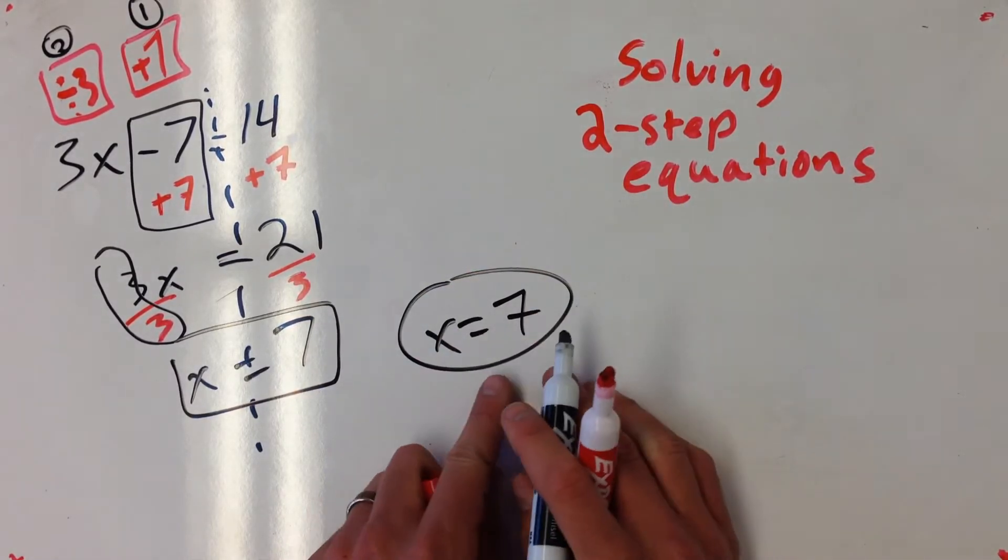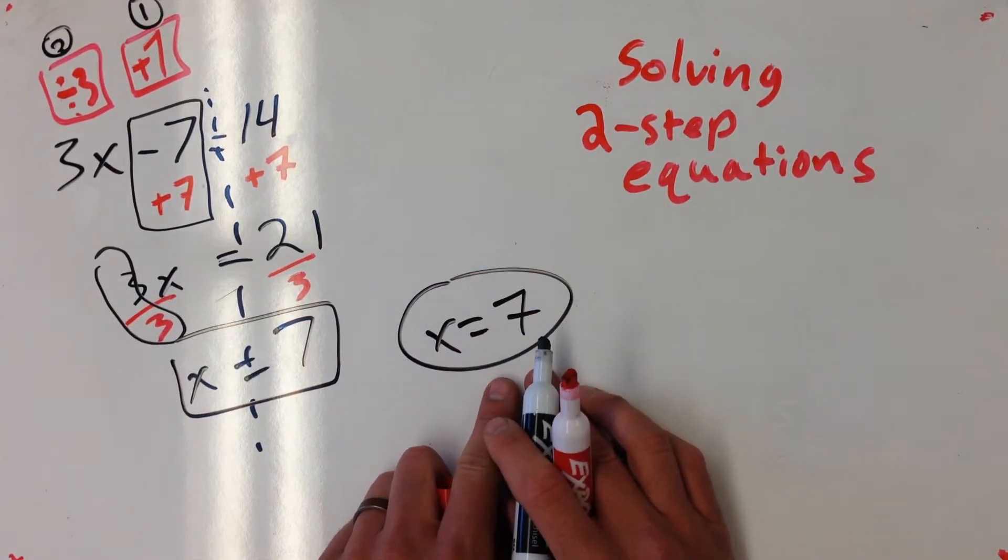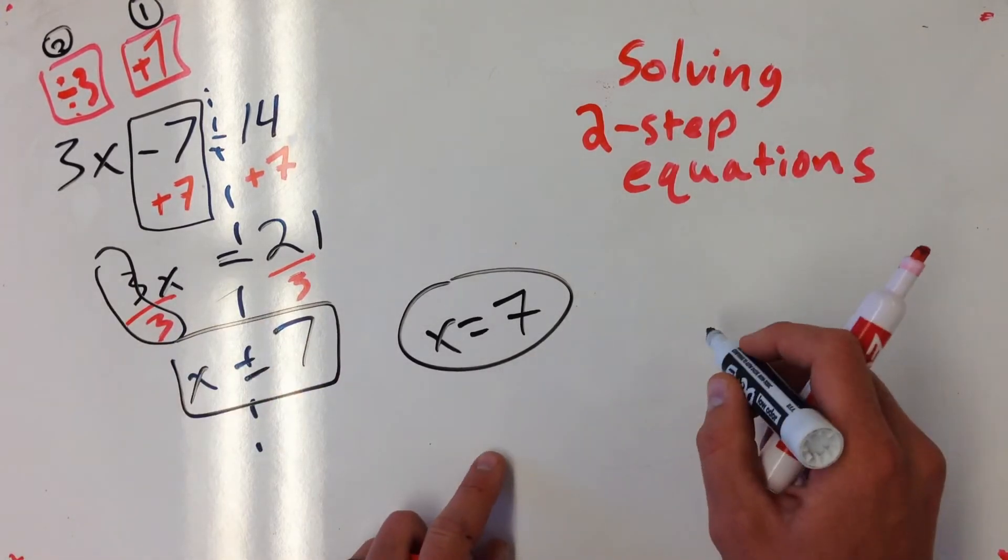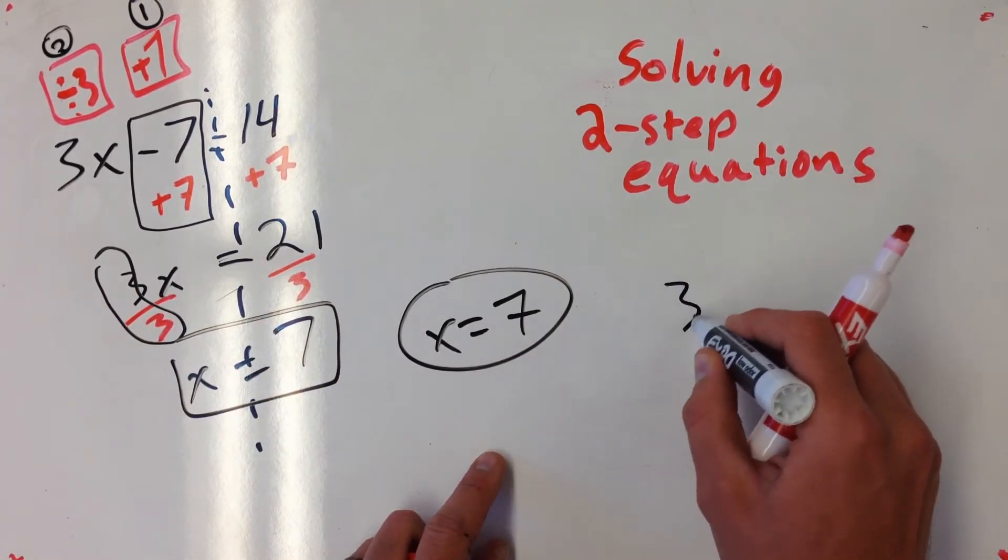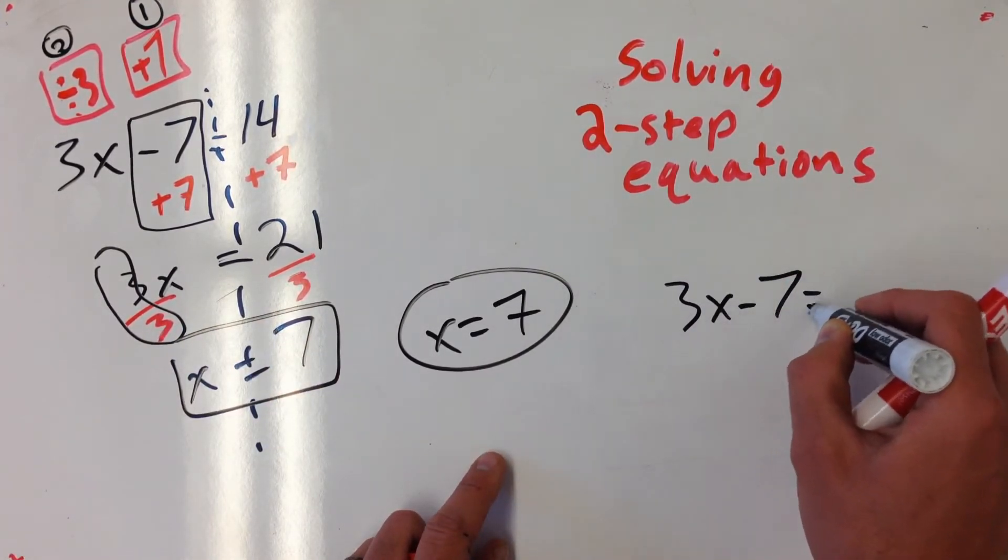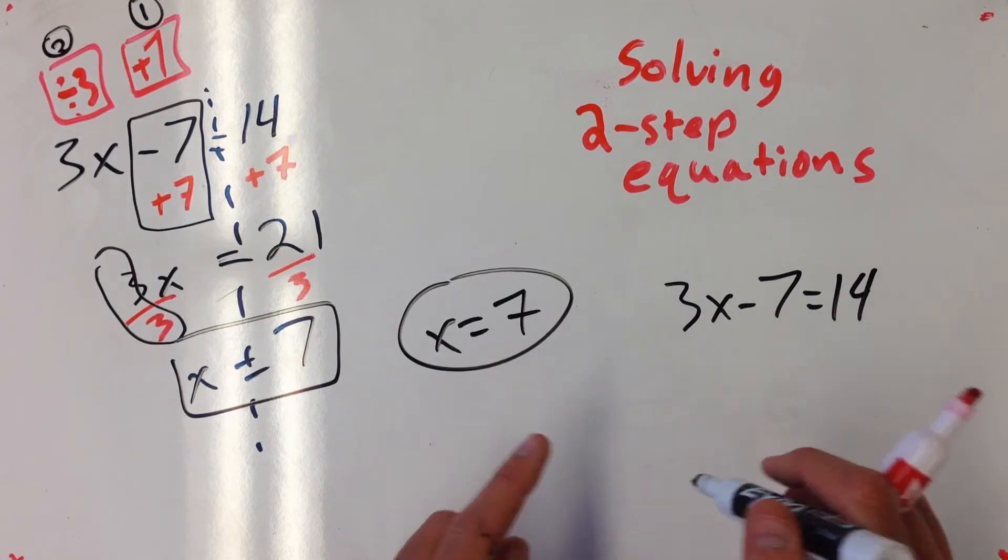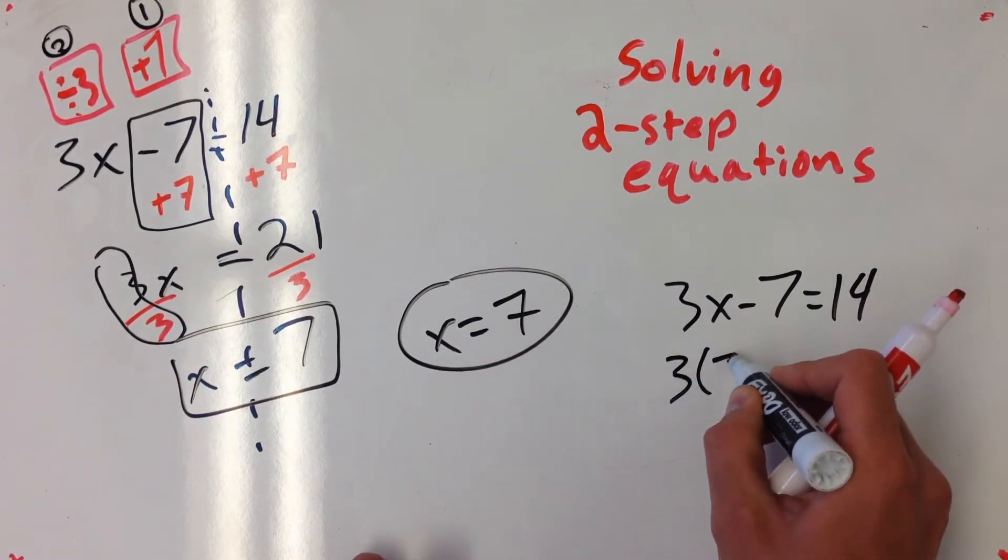Same thing. If I wanted to check this answer out, all I'd have to do is plug it back in the original equation. The original equation was 3x minus 7 equals 14. If indeed x is 7, this should totally make sense.